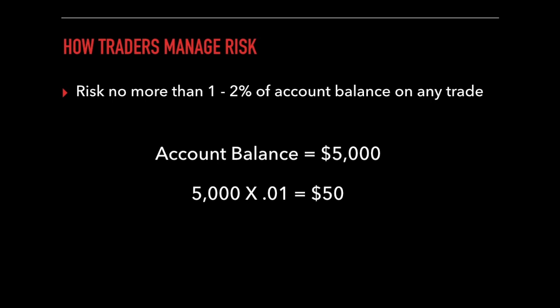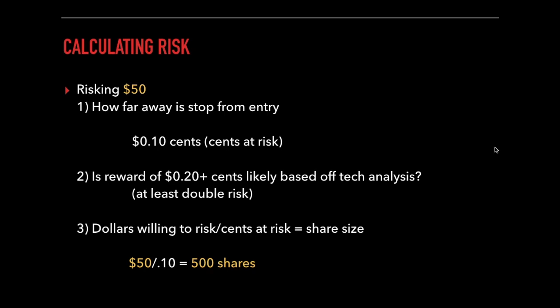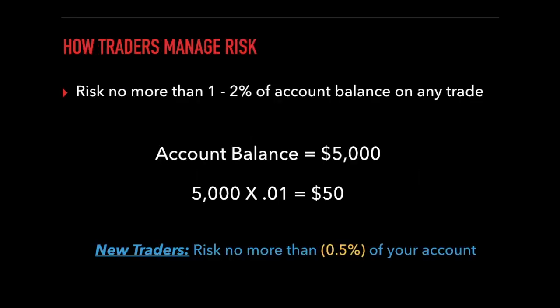When determining how much to risk per trade, a general rule of thumb is to risk no more than 1 to 2% of your entire account balance. With a $5,000 account, 1% is $50 — so on every trade, go through the same step process but insert $50 as the amount to risk, which would give you 500 shares instead. But personally, if you're just starting out, my advice is to risk an even smaller amount — maybe half a percent or lower — because trading is very difficult and you're going to make a lot of mistakes, especially starting out.